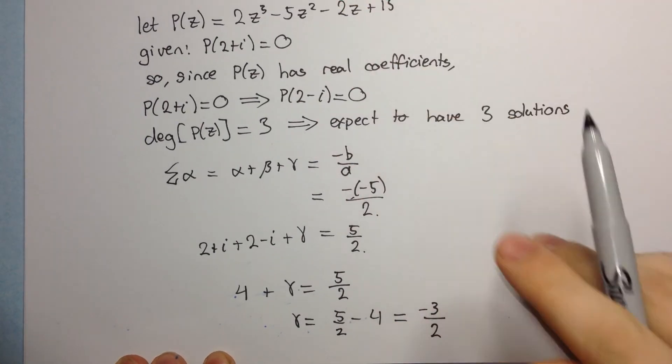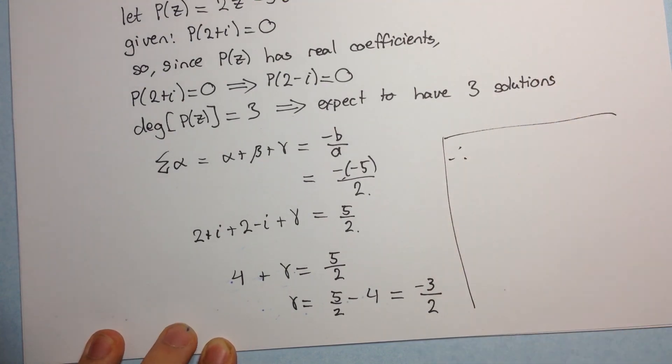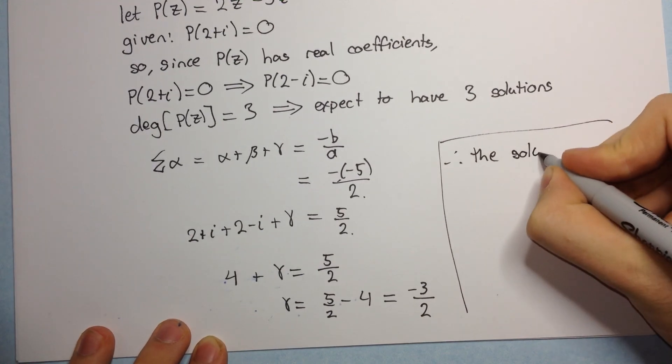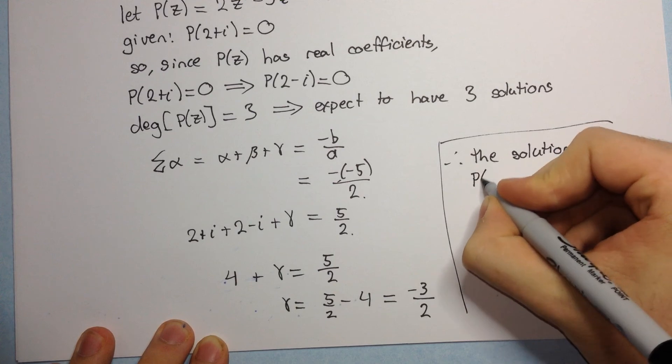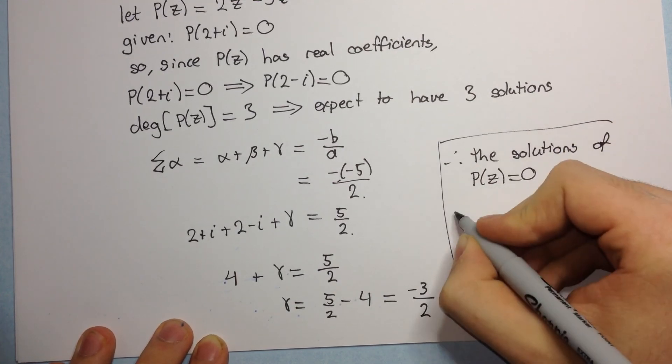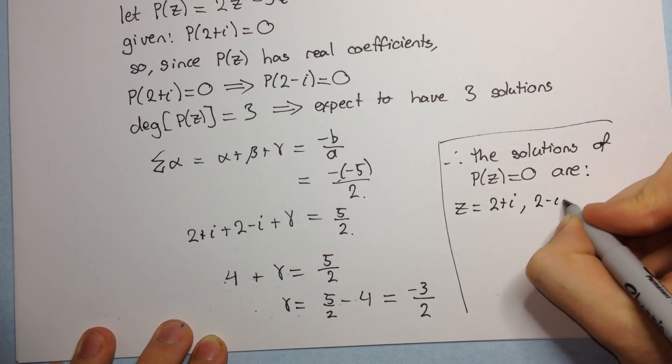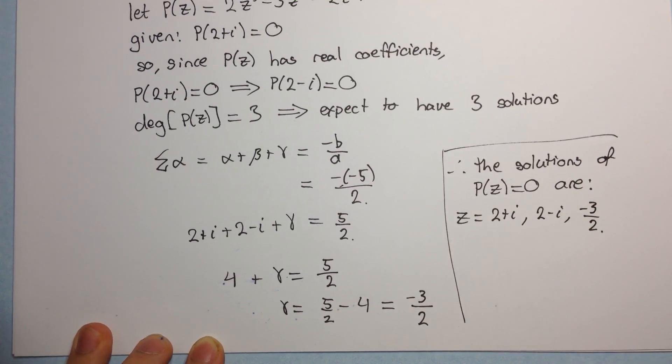So, we can just write here therefore the solutions of p of z equal to 0 are z equals 2 plus i, 2 minus i and negative 3 halves. Okay. Thank you.